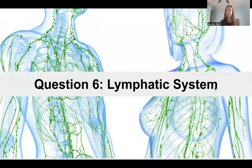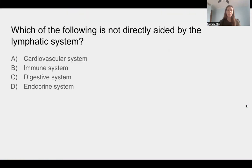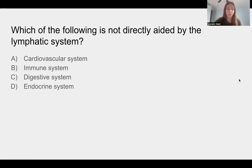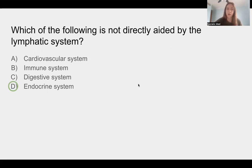Question six — we're going to talk briefly about the lymphatic system. Which of the following is not directly aided by the lymphatic system? The answer is D, the endocrine system, because hormones travel through the bloodstream, not the lymphatic system. However, the cardiovascular system, immune system, and digestive system are all directly aided by the lymphatic system.